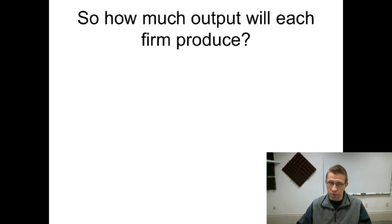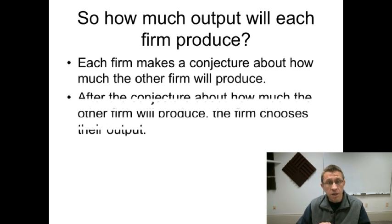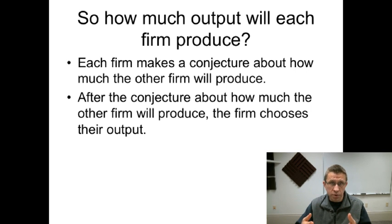The question we'll be looking at is what output will each firm produce in a Cournot model. To do this, each firm makes some conjecture about how much the other firm would produce. The firm starts with some assumption on what the other firm would produce and uses that to determine their own output. Once you make some assumption on how much output the other firm will produce, then you can choose your own output level, determine what the price will be in the market, and how much profit you would earn. Of course, the other firm is doing the same about you.